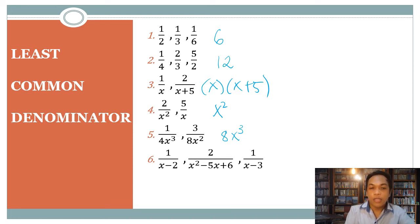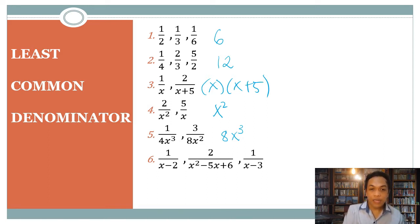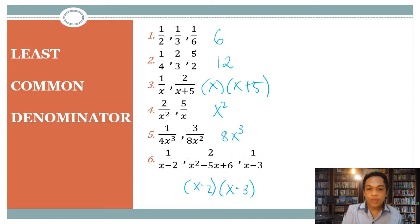For number six, we have one over (x minus two), one over (x squared minus five x plus six), and one over (x minus three). Since x squared minus five x plus six factors into (x minus two)(x minus three), we can use x squared minus five x plus six as our LCD.